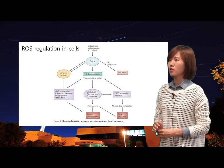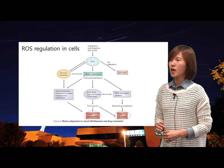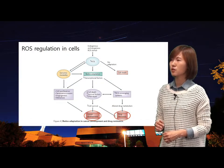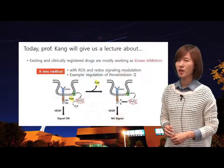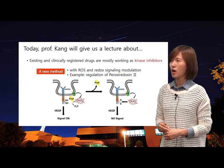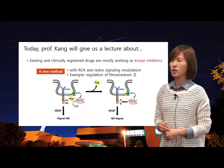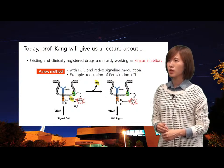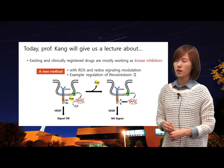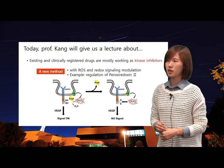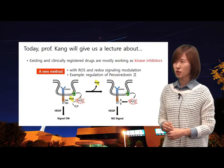If we look at a longer time scale, generation of ROS also causes other effects in cells. Adaptation to ROS can increase drug resistance and strengthen survival mechanisms for cancer cells. Today, Professor Kang will give a lecture about a new type of cancer treatment which uses ROS and redox signaling modulation to kill cancer cells. For example, there is peroxyredoxin 2 in our body and it protects VEGFR2 by removing ROS. If we eliminate peroxyredoxin 2, VEGF signaling cannot be transmitted to cancer cells and it causes damage to cells. Now let's move on to the main lecture.